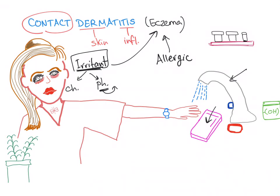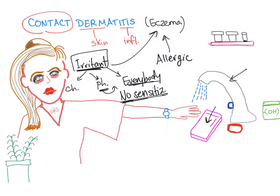With irritant contact dermatitis, the substance is irritating to everybody, and no sensitization is required. You don't have to be exposed to this substance before. A pesticide, for example, is irritant to everybody and it takes just one time — the first time you get pesticides on your skin, you will have dermatitis. This is the most common type, occurring in 80% of patients with contact dermatitis.